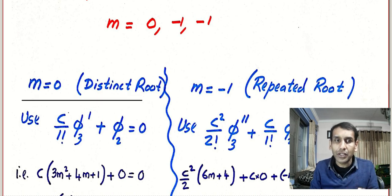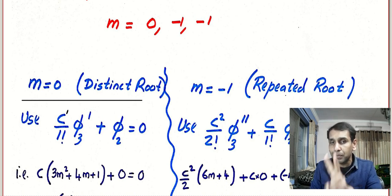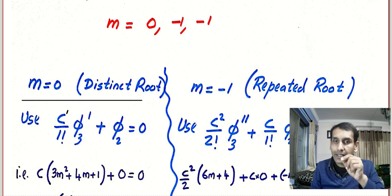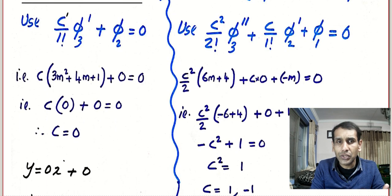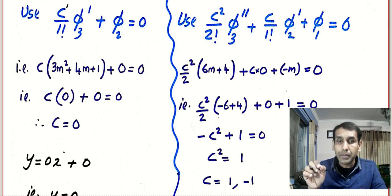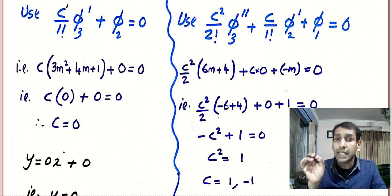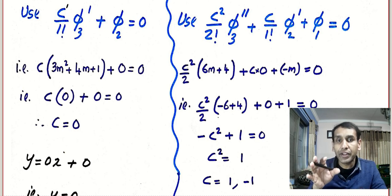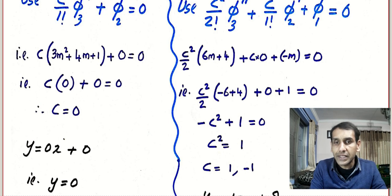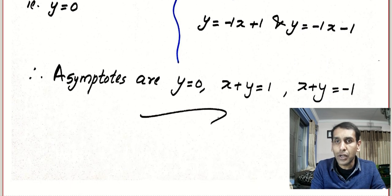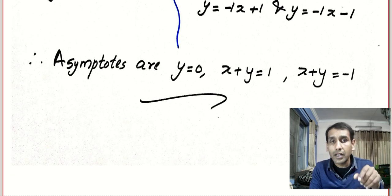For the distinct root, use the equation with c to the power 1. For the repeated root — since it repeats two times — use the equation with c squared. If it repeats three times, use c cubed. I will scroll slowly, but my recommendation is to pause the video and try this yourself. You will not score good marks unless you practice with pen and paper. I got three asymptotes — confirm the answer.